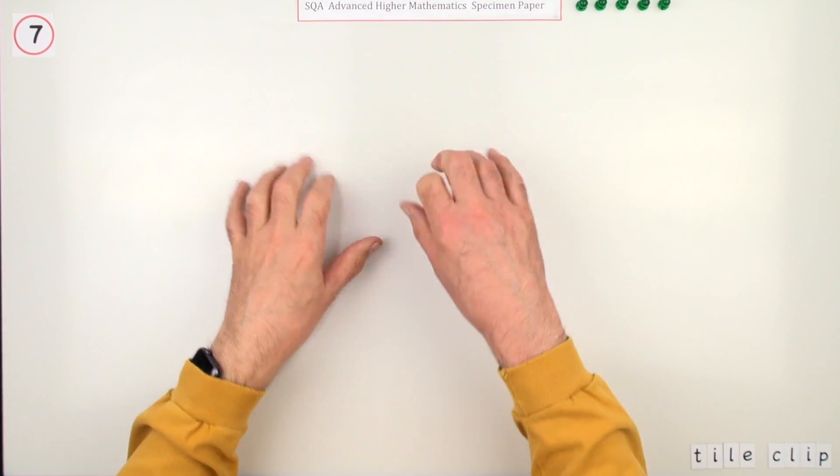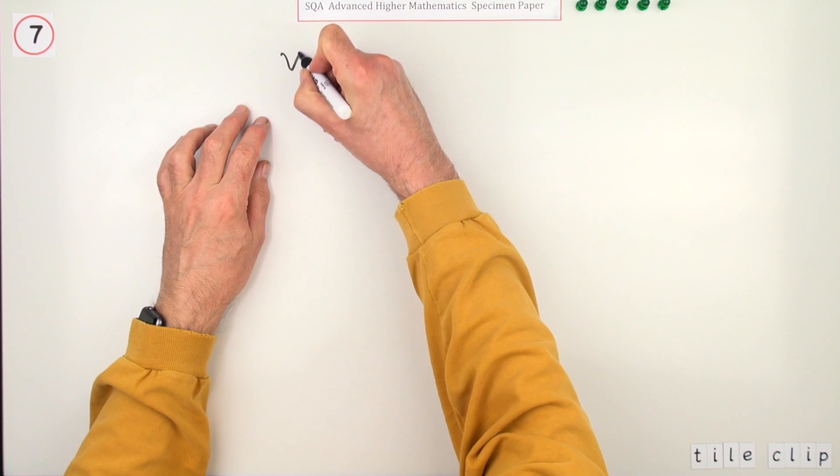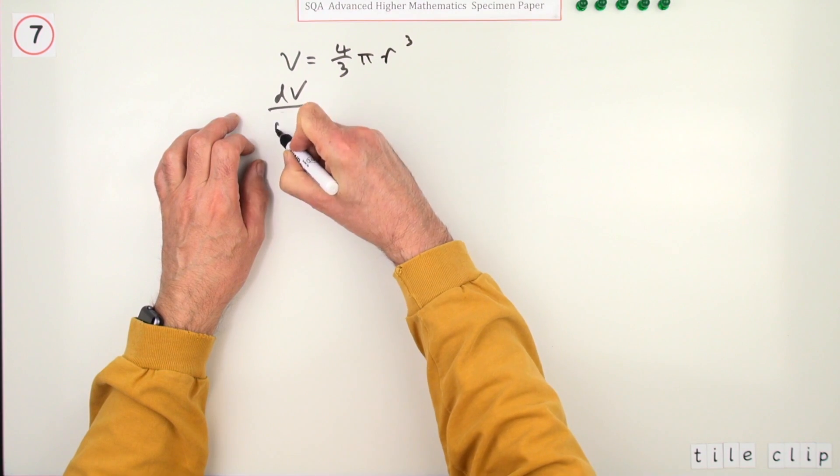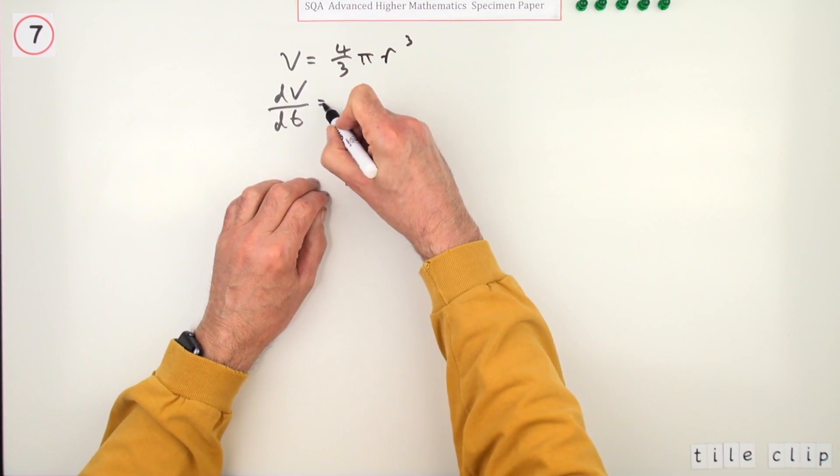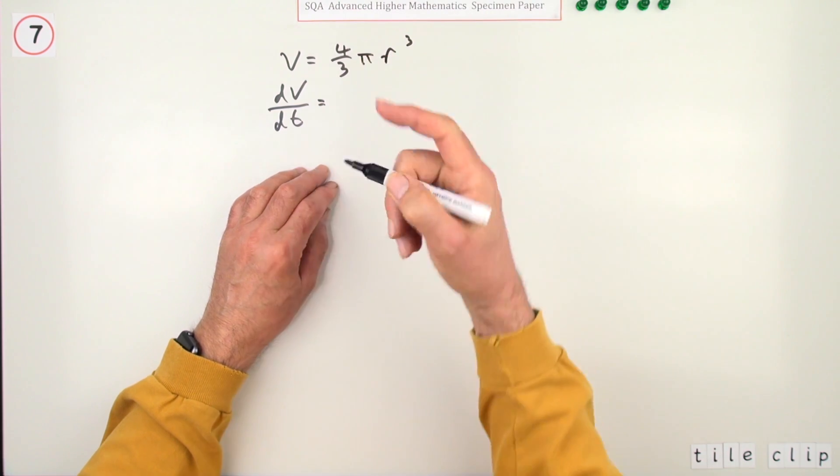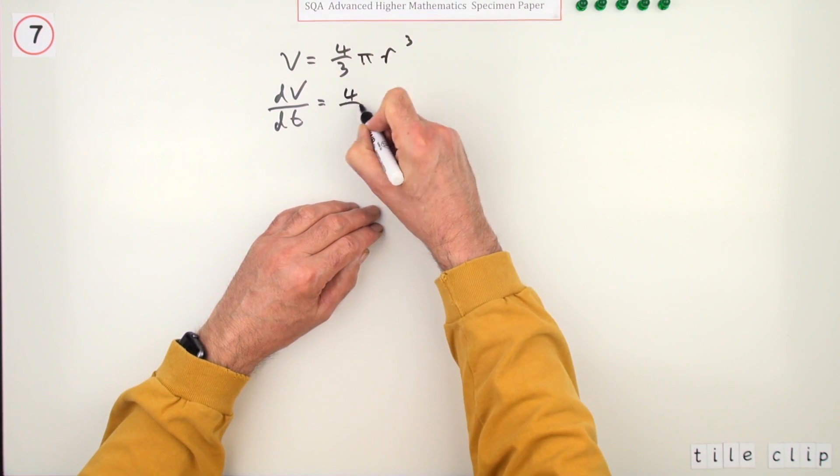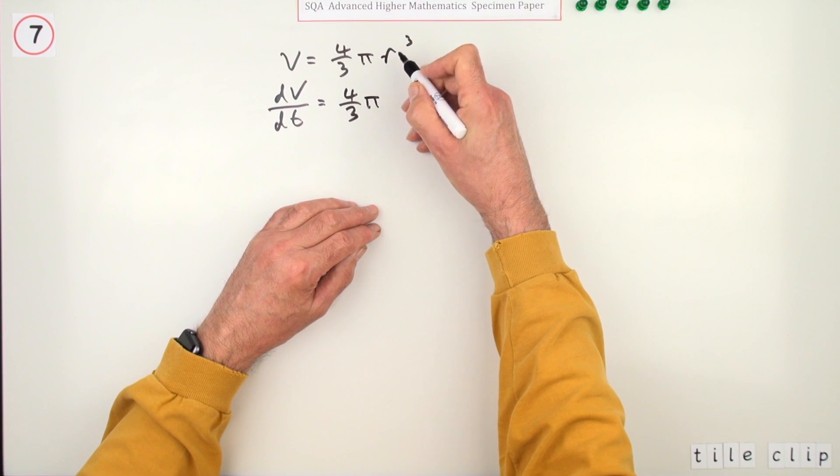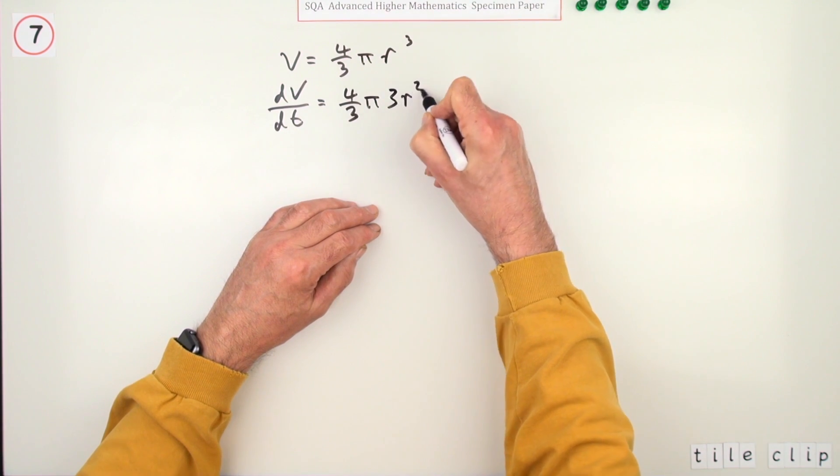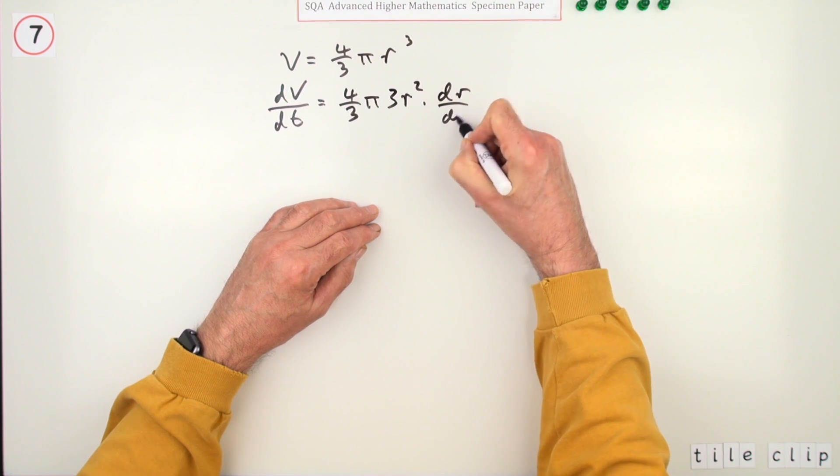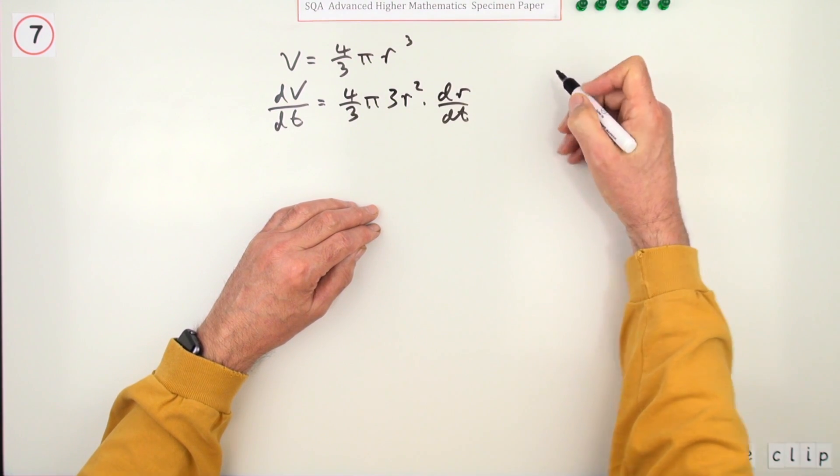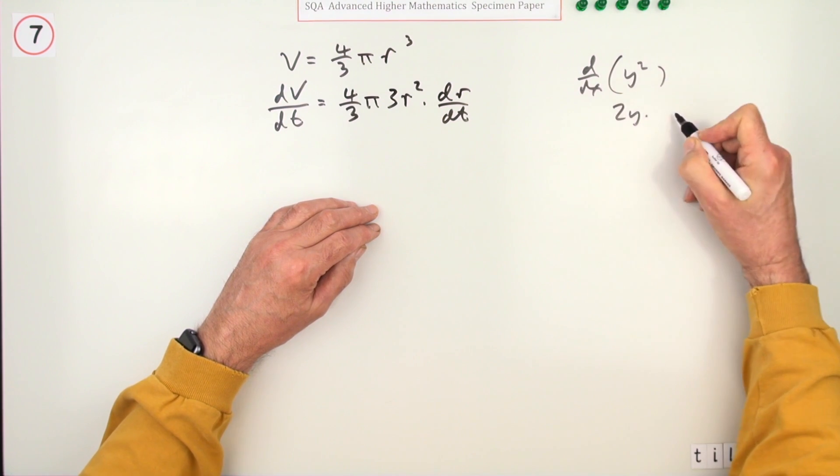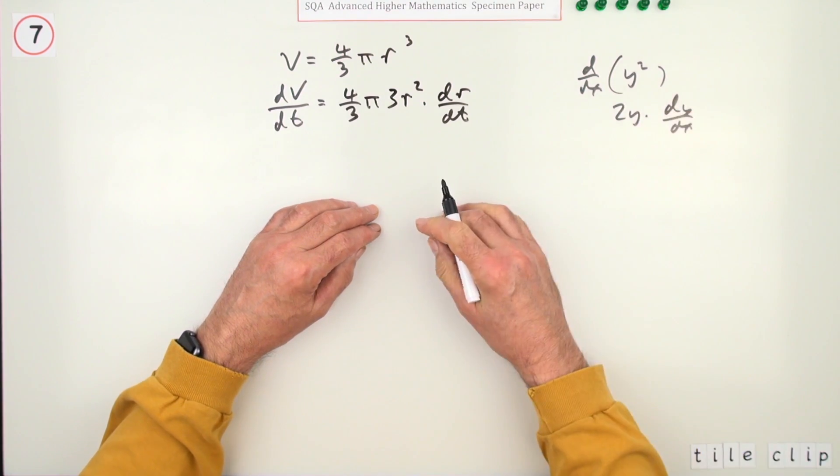You could have done this in one line using implicit differentiation. V = 4/3 πr³, so differentiating with respect to t directly: dV/dt = 4πr² times dr/dt using the chain rule. It's like differentiating y², which gives 2y times dy/dx.